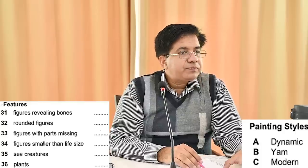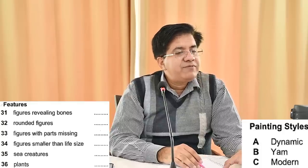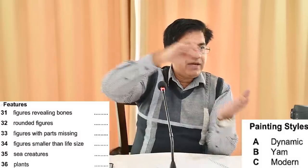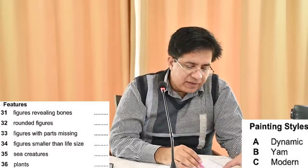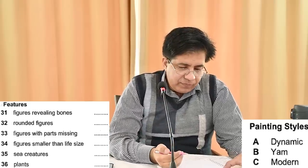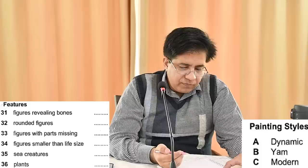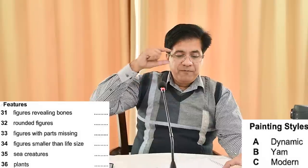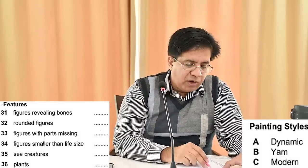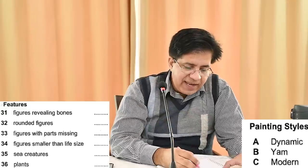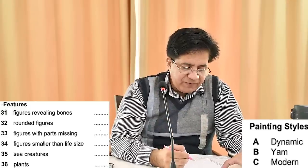Question 34: figures smaller than life size — those are called miniatures. Size is another characteristic; the more recent images tend to be life size or even larger, but the Dynamic figures are painted in miniature. Miniature means smaller than life size, so the answer for Question 34 is A — Dynamic. Question 35 is about sea creatures.